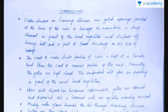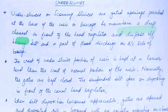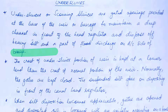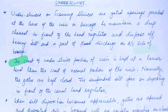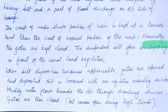Under sluices, or scouring sluices, mean the same thing. These are gated openings provided at the base of the weir or barrage to maintain a deep channel in front of the head regulator, and to dispose of heavy silt and a part of flood discharge on the downstream side of the barrage. The crest of the under sluice portion of the weir is kept at a lower level than the crest of the normal portion of the weir. Normally the gates are kept closed and the suspended silt goes on depositing in front of the canal head regulator.